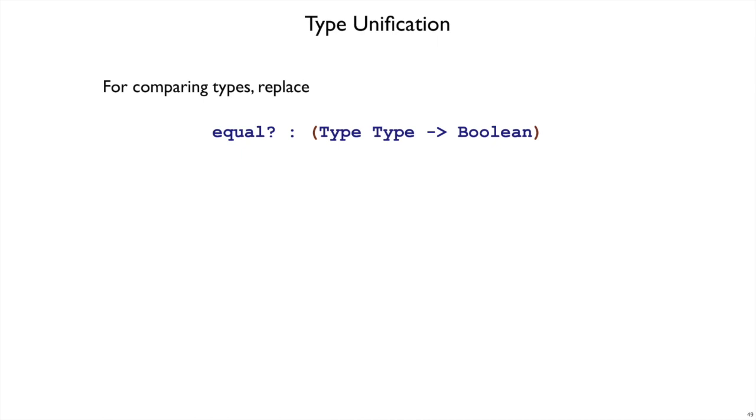To fit type inference into our curly type checker, we need to look for all of the places where our type checker currently uses equal. In all of those places, we're checking that some type is exactly equal to some other type.